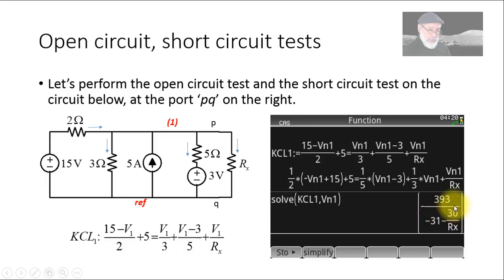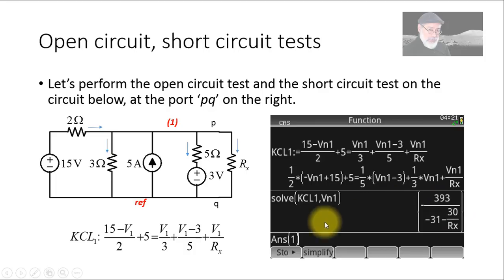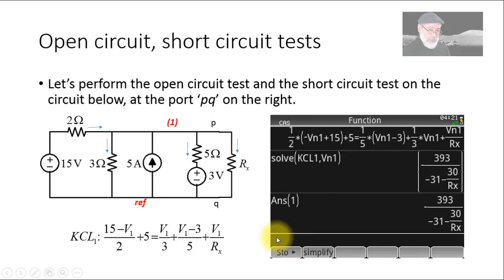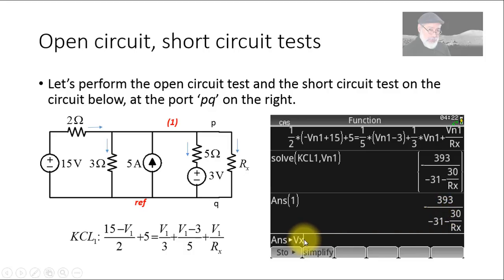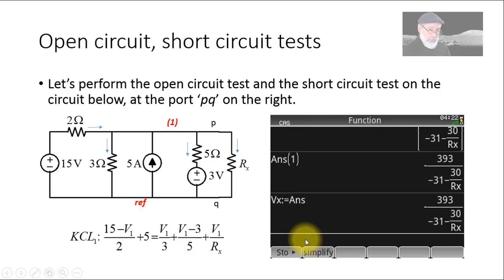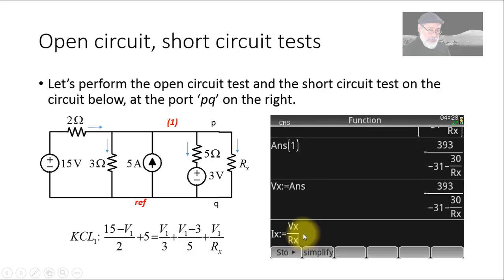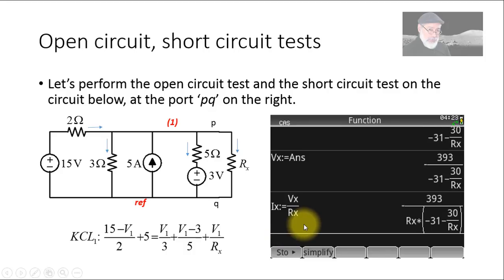I extract the single element from that list using 'first element of answer', and that is the voltage at node one. I assign it to the variable Vx — that is the voltage across resistor Rx. Next I compute the current in the external resistor as Vx divided by Rx.